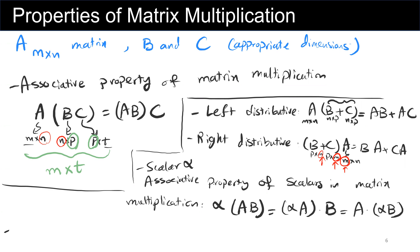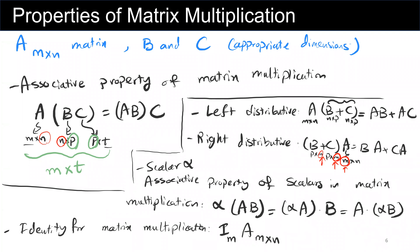Last but not least is the identity property for matrix multiplication. The m-dimensional identity matrix I_m multiplied by matrix A (which is m by n) equals matrix A (m by n) multiplied by I_n. Both of these equal matrix A.